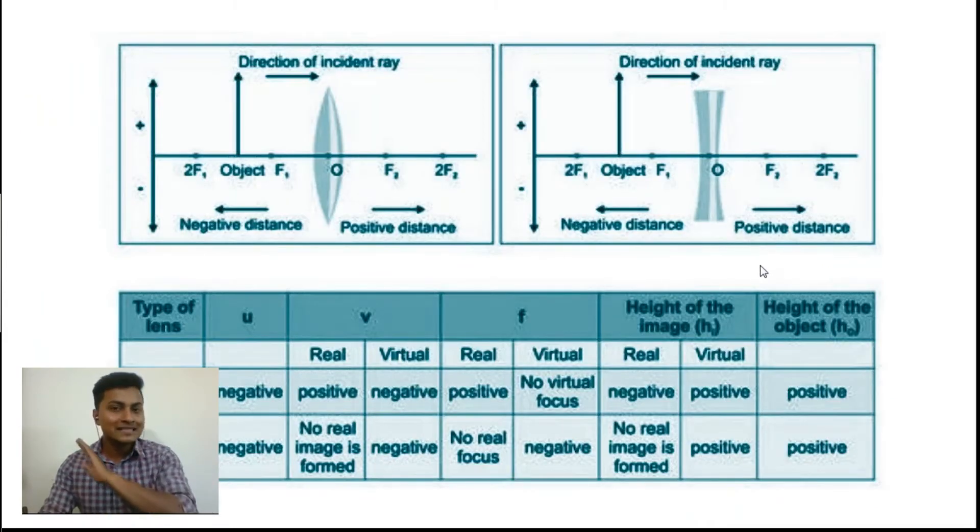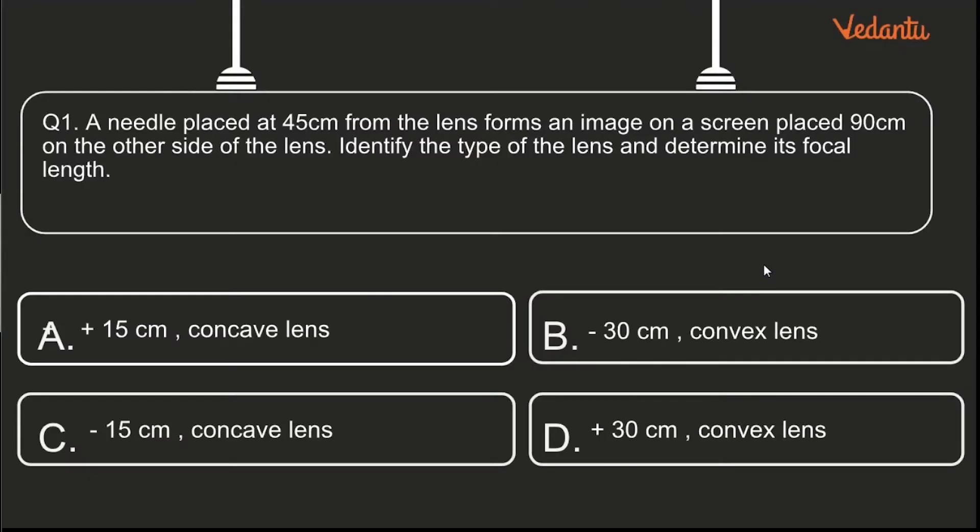I'm going to give exactly five minutes to do this. Go forward and do it. First question: a very simple question. A needle placed at 45 centimeter from the lens forms an image on a screen 90 centimeter on the other side of the lens. Identify the type of the lenses and determine its focal length.